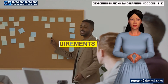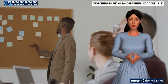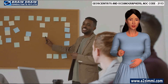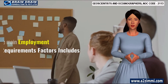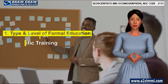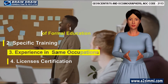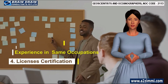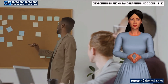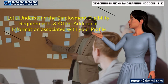Employment requirements and other additional information: every job has a specific set of employment requirements. The main employment requirement factors include: type and level of formal education, specific training or apprenticeship, experience in the same or related occupations, and licenses, certification, and registration to practice in a regulated profession.